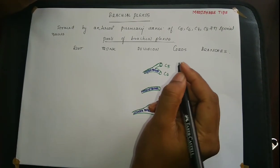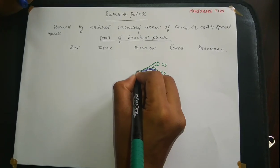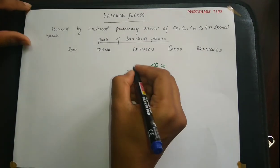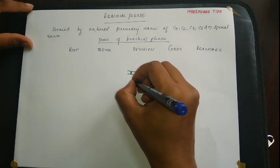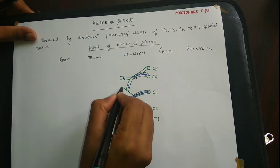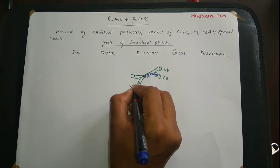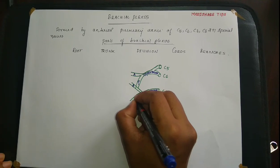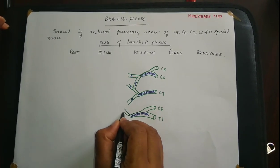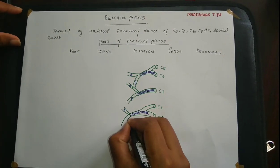Each trunk divides into two divisions — an anterior and a posterior division. This is the anterior division and the posterior division of the upper trunk. This is the anterior division and the posterior division of the middle trunk. This is the posterior division and the anterior division of the lower trunk.